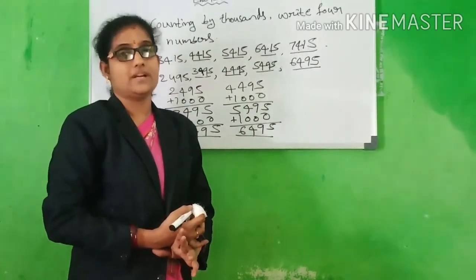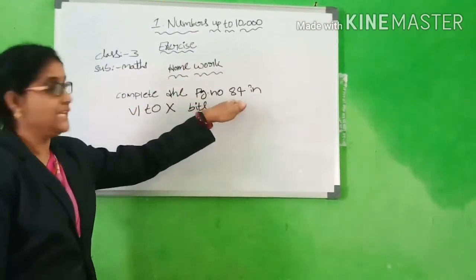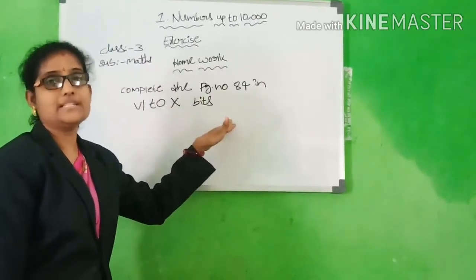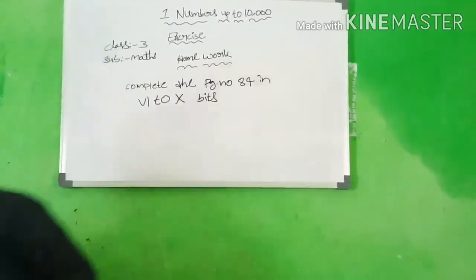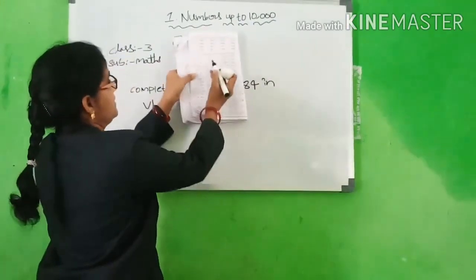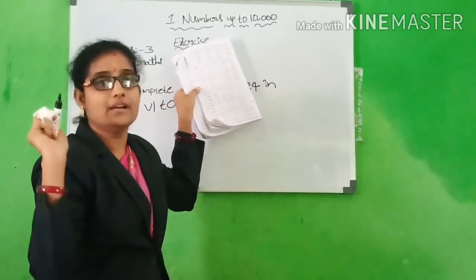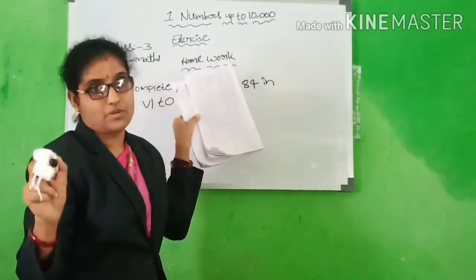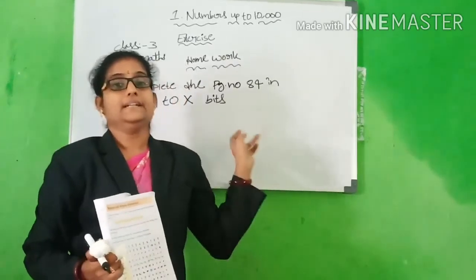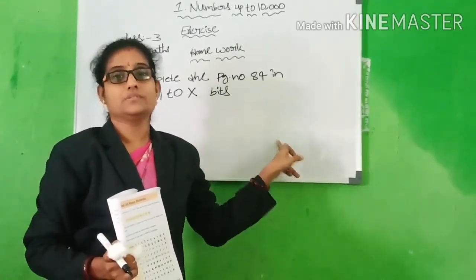Okay, copy this one. Homework: complete page number 84, exercises 6th to 10th. You have to write these in your textbook. Complete the textbook. Okay, children — you have to write this in your textbook. Thank you.